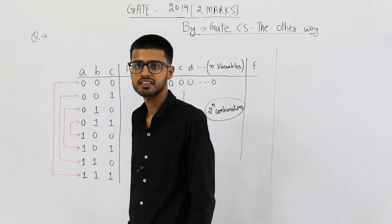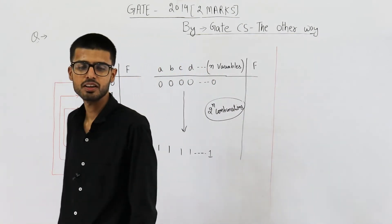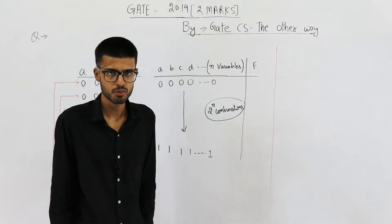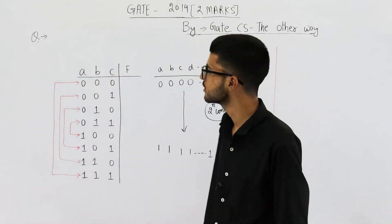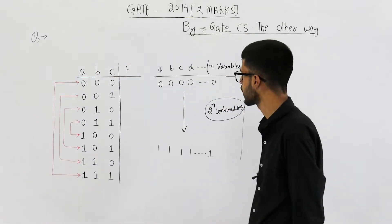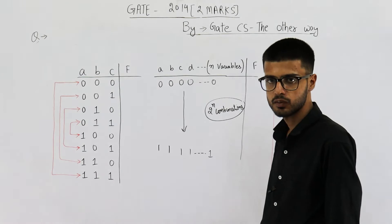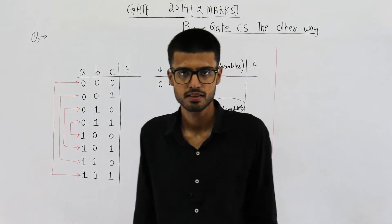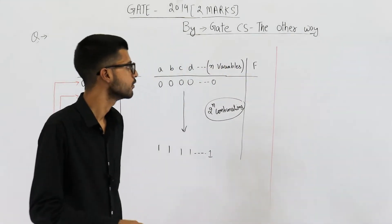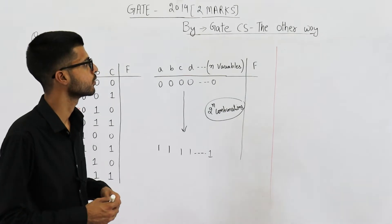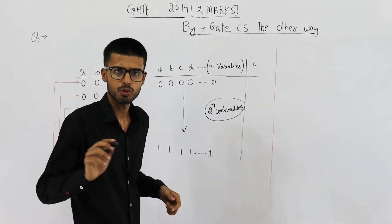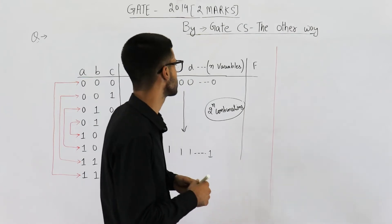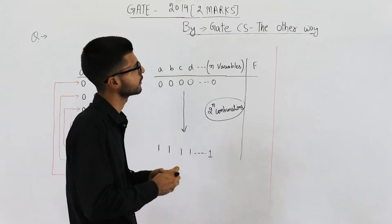Hello students, welcome back. This is a question from GATE 2010 Exam Set 2, it's for two marks. They're asking: what is the number of self-dual functions on n variables? First thing is, what is a self-dual function? For that you need to know what is the dual of a function. Both of the things are defined in the question, but it's better if you know them already.